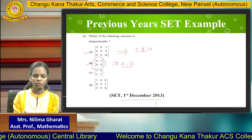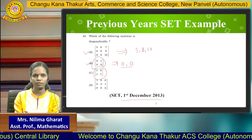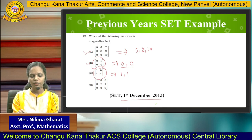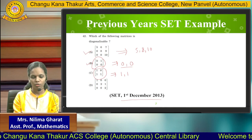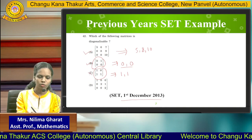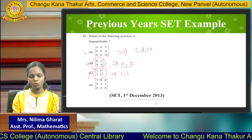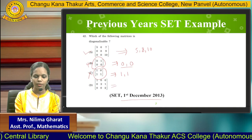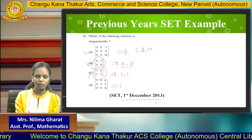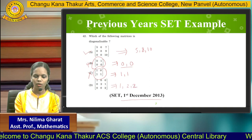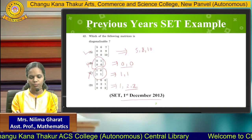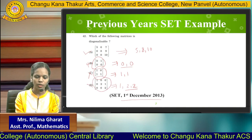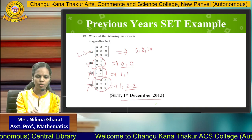For option C, this is a lower triangular matrix. Therefore the eigenvalues are 1 and 1, which are not distinct, so this matrix is also not Diagonalizable. Hence option A is correct. For option D, this is an upper triangular matrix with eigenvalues 1, 2, and 2 — again repeated eigenvalues. Therefore this matrix is not Diagonalizable. Hence option A is the correct answer.